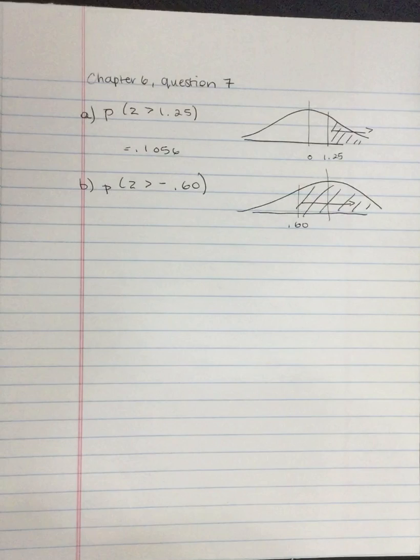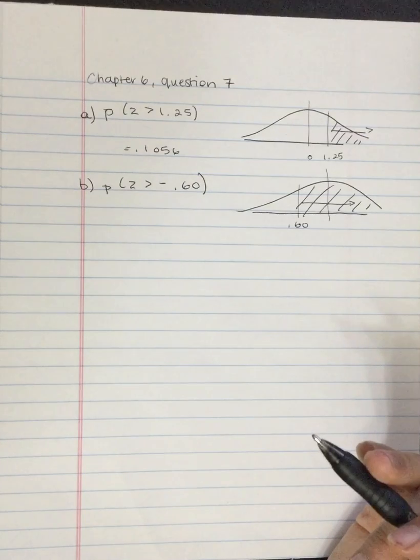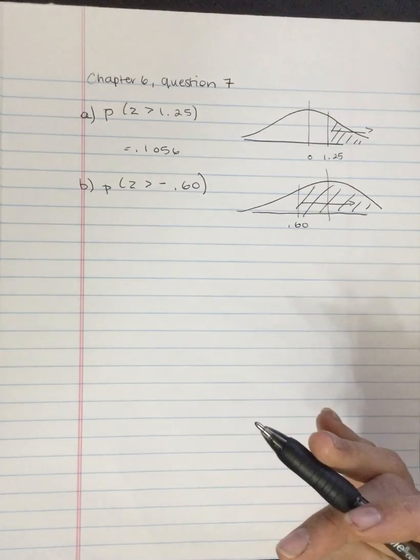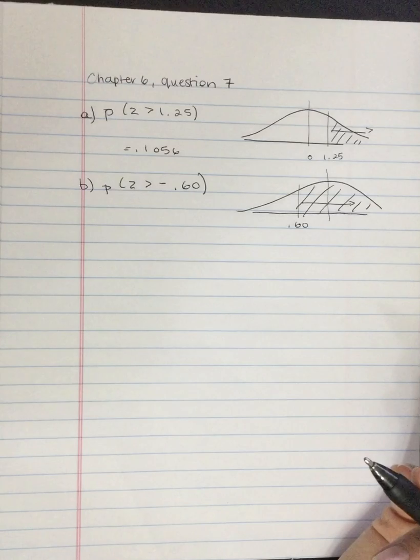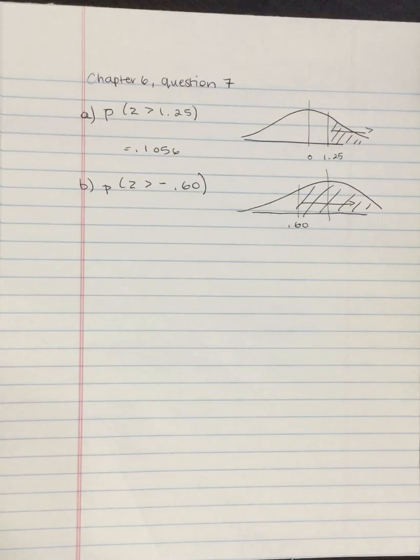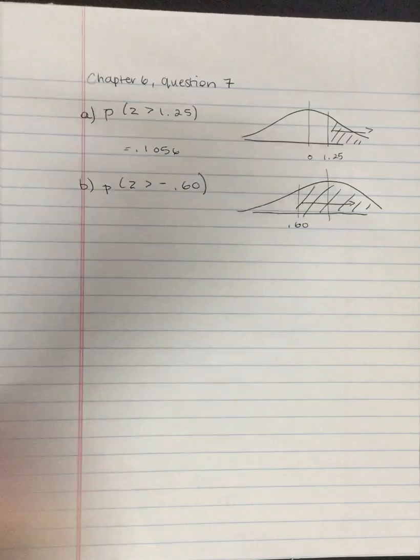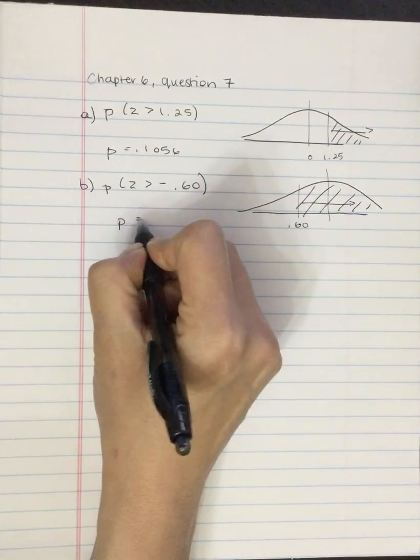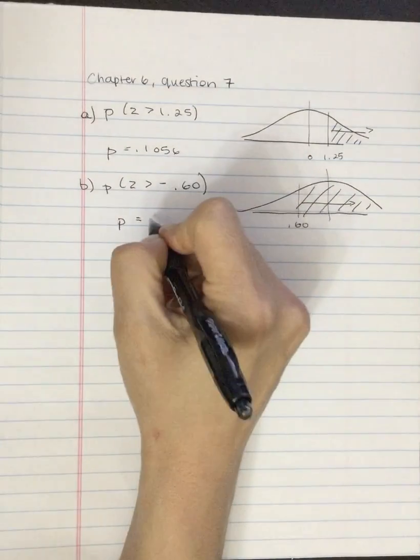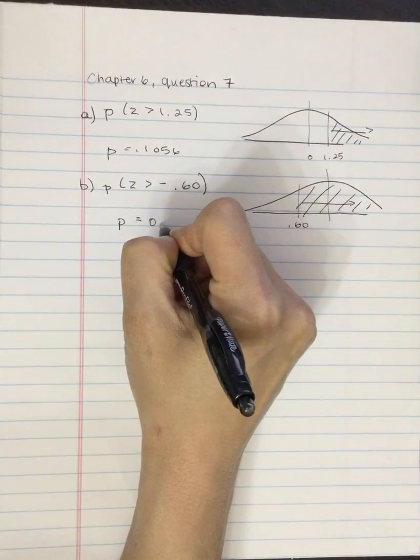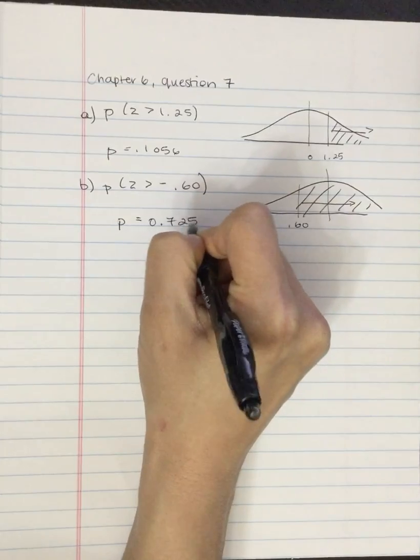So we're going to go to that unit normal table. We're going to find 0.60. Now remember that the normal curve is symmetrical. So even though the table only has positive Z scores, because the distribution is symmetrical, it also has all of the negative values. So we want to go to column B, the proportion in the body. And so this probability is equal to 0.7257.